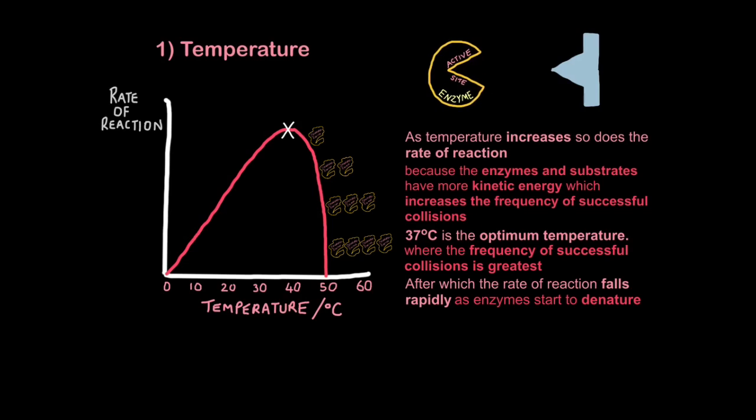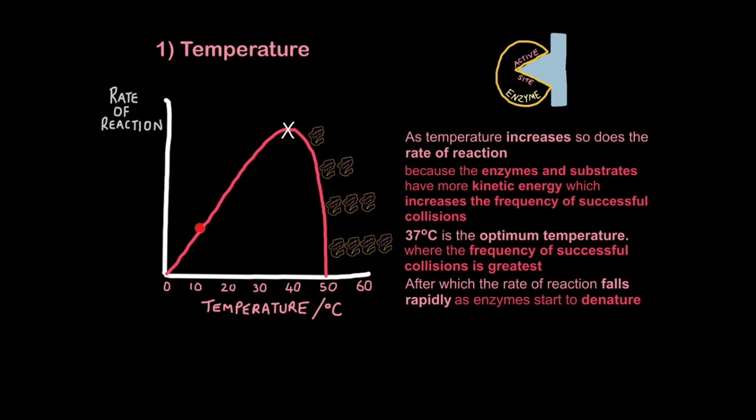Now the explanation, because the enzymes and substrates have more kinetic energy, which increases the frequency of successful collisions. So at low temperatures, enzymes and substrates move slowly, and at high temperatures, they move quicker. That increases the chances of them colliding successfully. Just like in a dodgem car rink at a fairground, imagine lots of dodgem cars are moving randomly, and then you could speed them up. They would hit each other more frequently. But the other important language to use is I've not just said collision, but successful collision. So a successful collision is when the active site bonds with the substrate.